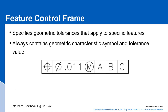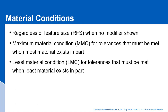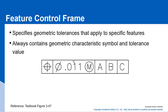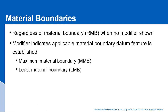Here's a picture of the feature control frame. Let's talk about material conditions. RFS is regardless of feature size. MMC is at the maximum material condition. LMC is at the least material condition. Those are specified within the tolerance portion of the feature control frame. If the modifier appears in the datum reference area, it's called material boundary — regardless of material boundary when no modifiers are shown, maximum material boundary if the M modifier is shown, and least material boundary if the L modifier is shown.